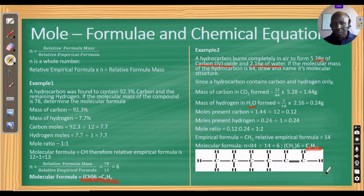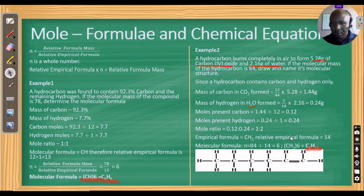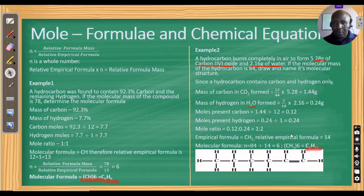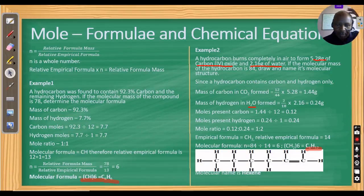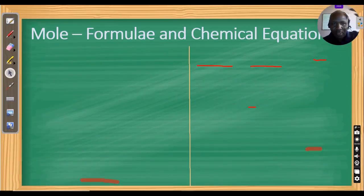You can now draw the structure from your organic chemistry lessons. The molecular name of the compound — a hydrocarbon with formula C₆H₁₂ — is hexene.